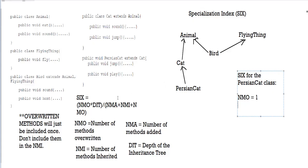Next, let's calculate NMI — the number of methods inherited. Except for jump, because we don't include overwritten methods again in the inherited methods calculation. We have the sound method in cat, and in animal we also have sound and eat. Since sound appears in both cat and animal, only include it once. So we have sound and eat, giving us the number of methods inherited for Persian cat equal to 2.